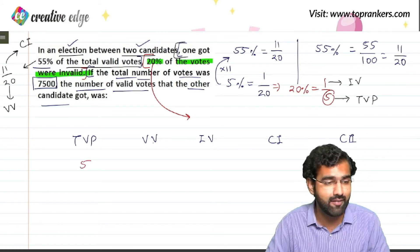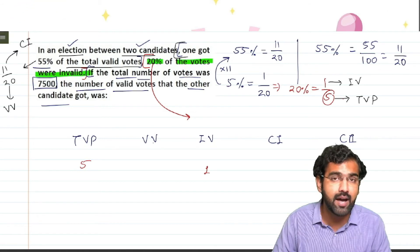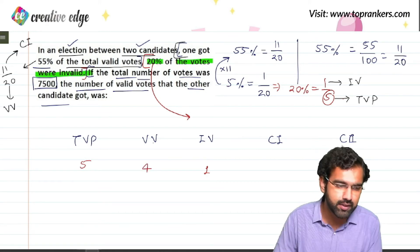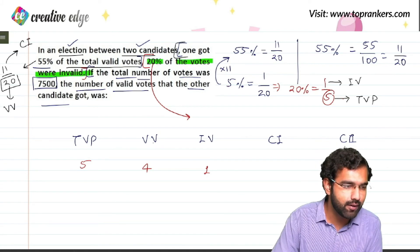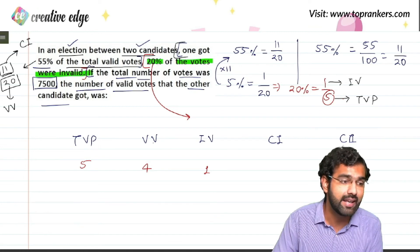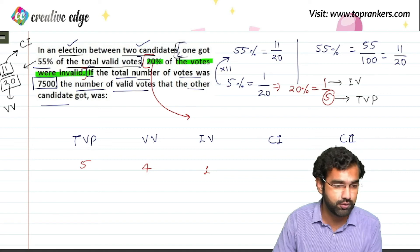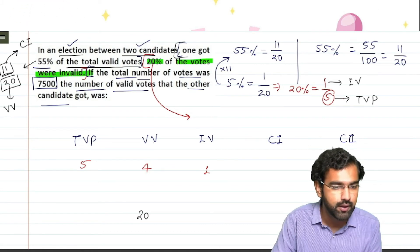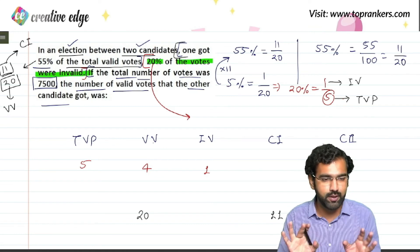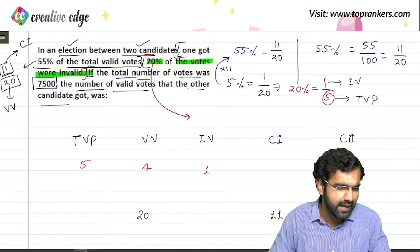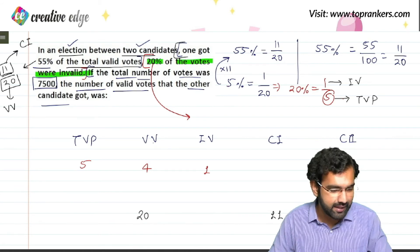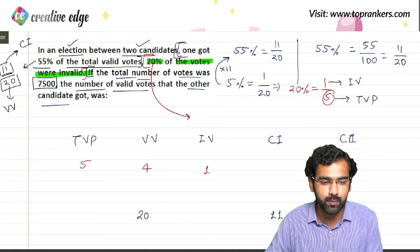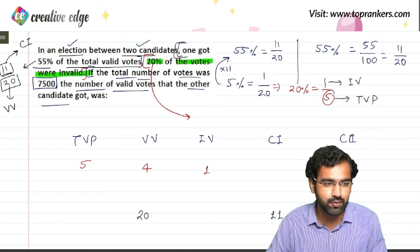So on ratio scale, if 5 total votes are polled, 1 is discarded, leaving 4 valid votes. There's one more data: out of every 20 valid votes, 11 were received by candidate one. So if valid votes are 20, candidate one receives 11, and candidate two must receive the remaining 9 votes.